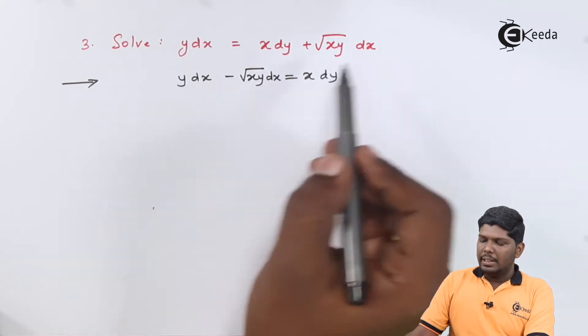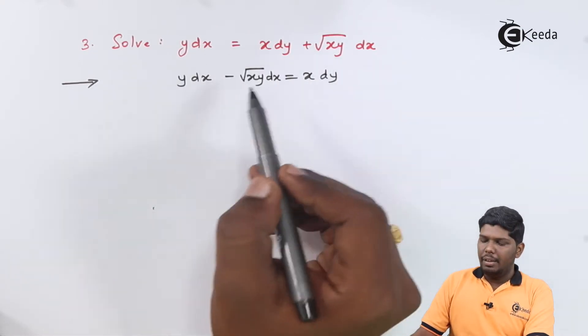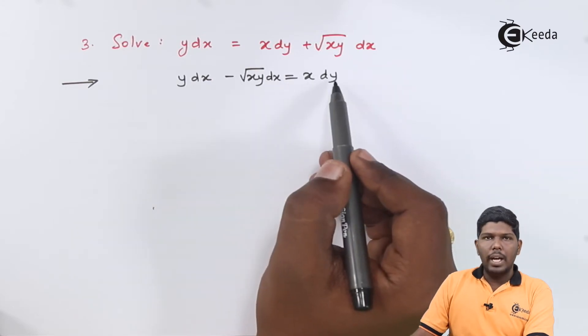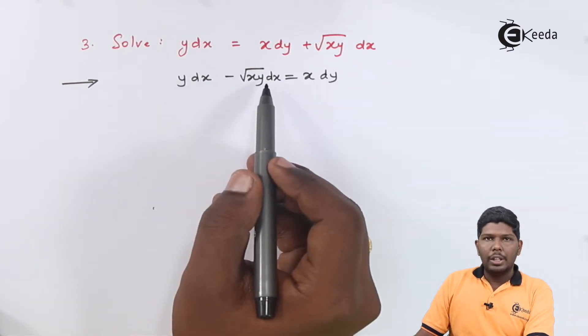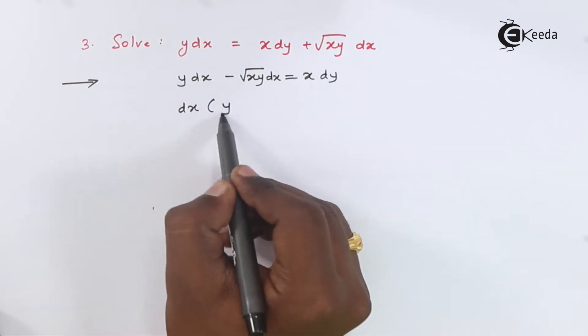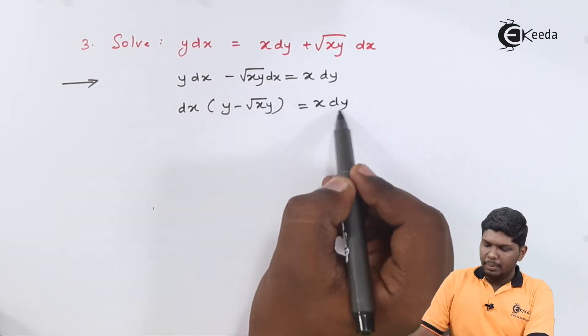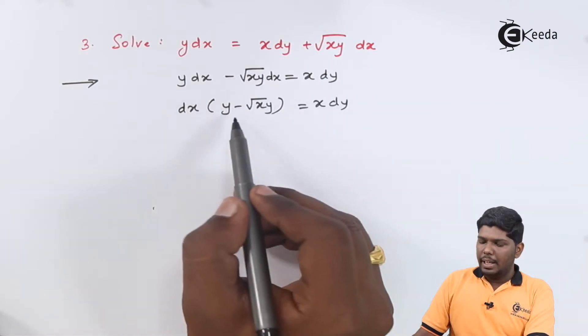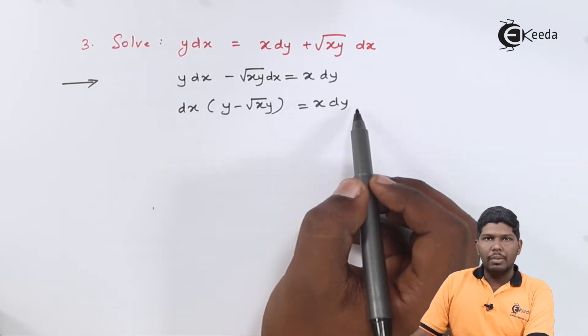We have y dx, taking this term on the left-hand side, we have minus under root xy dx is equal to x dy. Here, you can take dx common that will give you dx into y minus under root xy is equal to x dy.